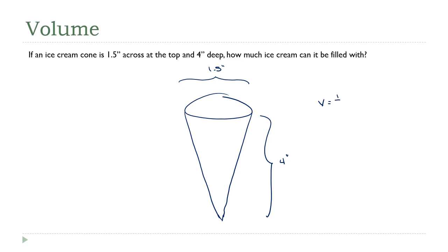The volume of a cone is one-third pi r squared h. So that's one-third times pi times 1.5 divided by 2 squared, because the radius is half the diameter, times 4. And my calculator tells me this is 2.355 cubic inches.